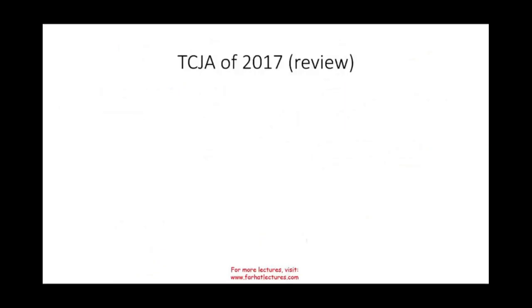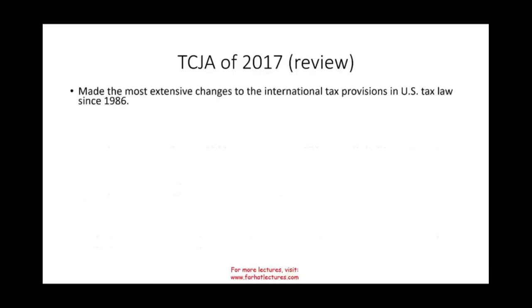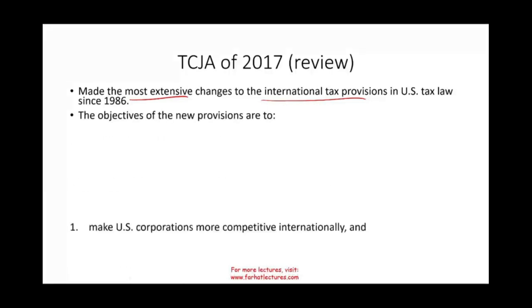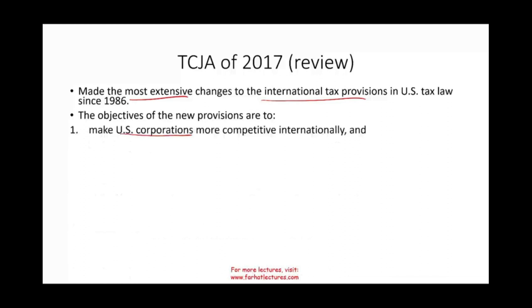GILTI is basically a confusing topic, so I'm going to try to simplify this as much as possible. This is a review from the prior session. In 2017, the Tax Cuts and Jobs Act made the most extensive changes to international tax provisions in the U.S. since 1986. The objective was to make U.S. corporations more competitive internationally, and basically to reduce the income tax rate from 35 to 21, and prevent the erosion of the U.S. tax base.